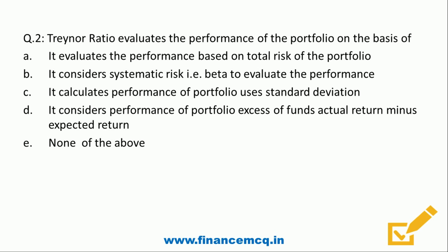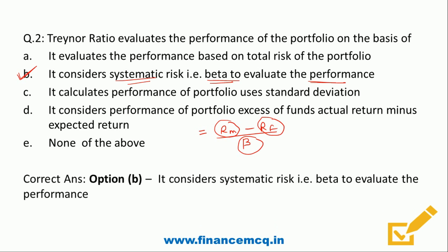Before the answer, let's know how to calculate return using the Treynor ratio. The formula is (Rm − Rf) / Beta, where Rm is market return, Rf is risk-free return, and Beta is the beta of the portfolio. Therefore option B is correct — it considers systematic risk, that is beta, to evaluate portfolio performance.